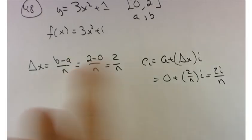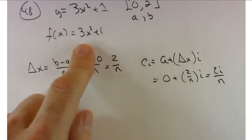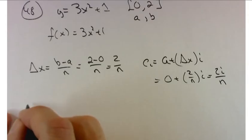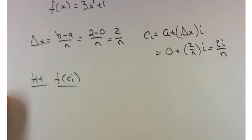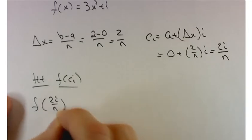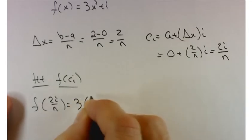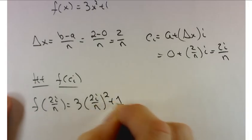So that's the width. The height of my rectangles isn't here. It's the function evaluated at that point. So the height is going to be f of c sub i. Let's do that calculation. So f of 2i over n is going to be 3 times (2i over n) squared plus 1.